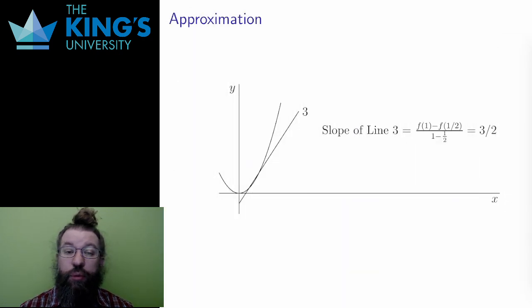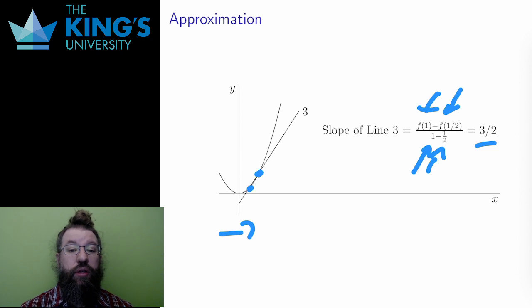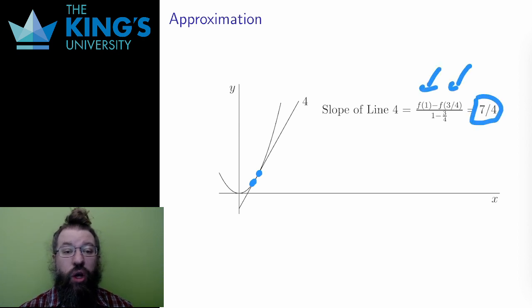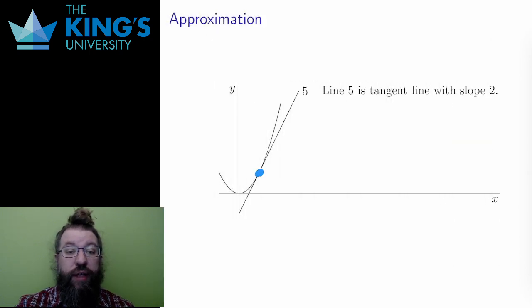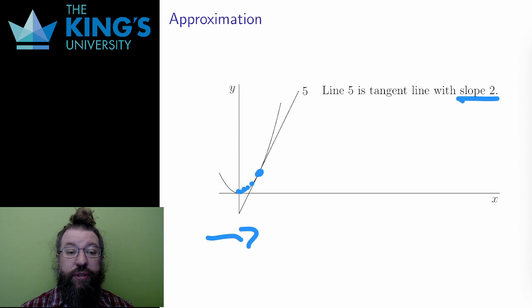Then I move the first point a bit closer to x equals 1 — say x equals 1/4 instead of x equals 0. I still have two points, so I still have a secant line and can still get a slope. The difference is now f(1) minus f(1/4), and the denominator is 1 minus 1/4, giving a slightly steeper slope, say 5/4. I keep going, moving the first point closer: x equals 1/2, slope works out to 3/2; then x equals 3/4, slope is about 7/4. What I want to do is take the limit of this process, finding the tangent line by moving the first point closer and closer to the second, reaching slope 2.